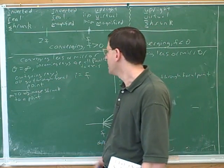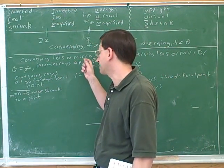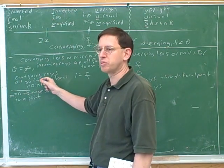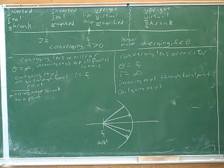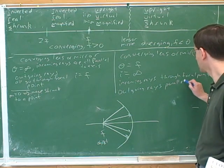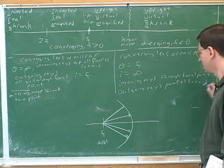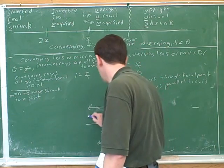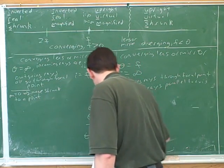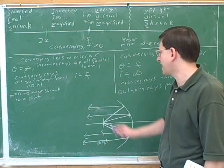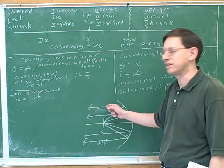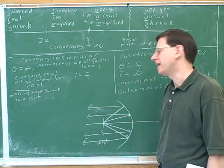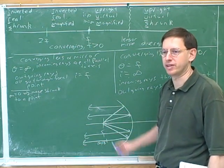We're trying to be symmetrical with the previous case. In that case, the incoming rays were parallel to the axis and the outgoing rays went through the focal point. So if the incoming rays are going through the focal point, the outgoing rays should be parallel to the axis. This is just the exact reverse: before, all rays came in horizontally and went out to a point; now all rays come in from that point and go out in parallel.